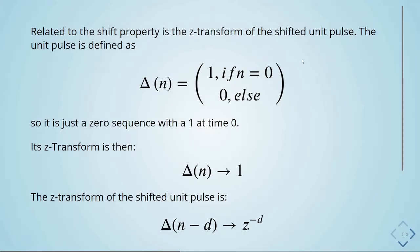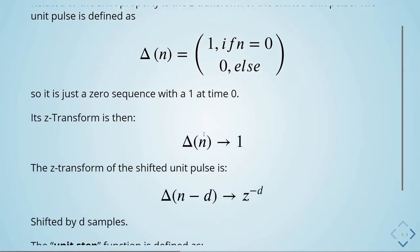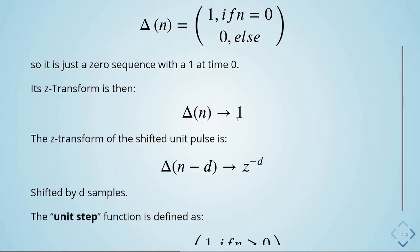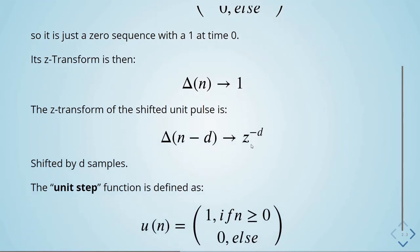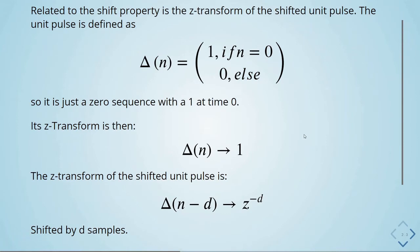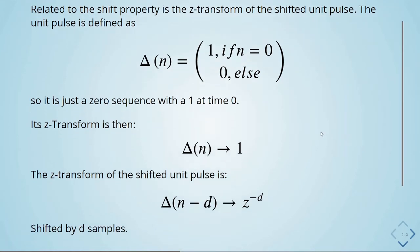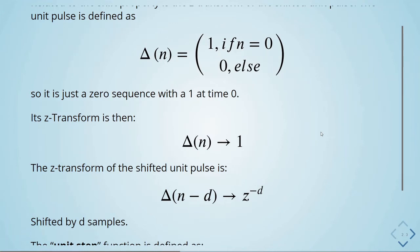Related to the shift property is the Z transform of the shifted unit pulse. The unit pulse δ[n] is defined as one if n equals zero and zero elsewhere — it's a zero sequence with a one at time zero. The Z transform of the shifted unit pulse δ[n−d], shifted by d samples, is z to the power of minus d.